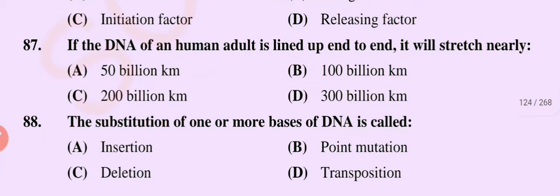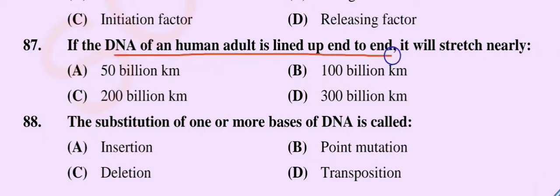Question number 87. If the DNA of a human adult is lined up end to end, it will stretch nearly: option A, 50 billion km; option B, 100 billion km; option C, 200 billion km; option D, 300 billion km. The correct option is option B, 100 billion km.